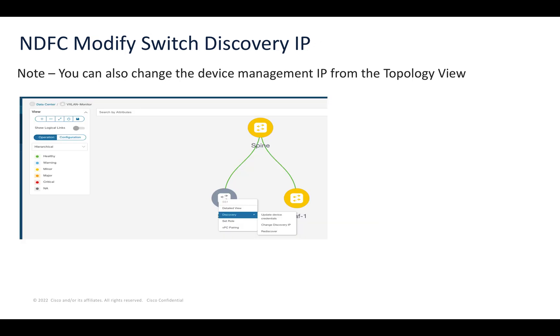We can also run this operation by going into the topology view, then going into Discovery and selecting Change Discovery IP.